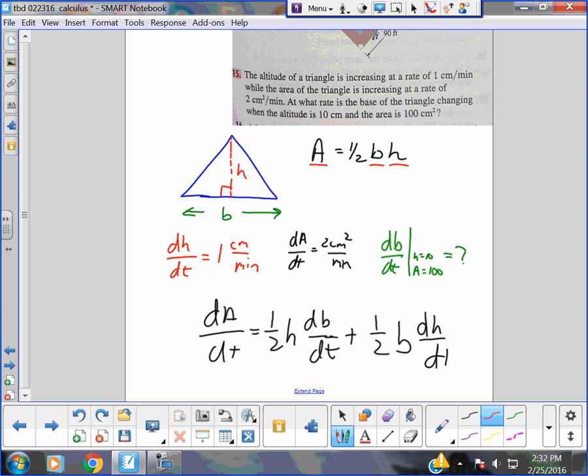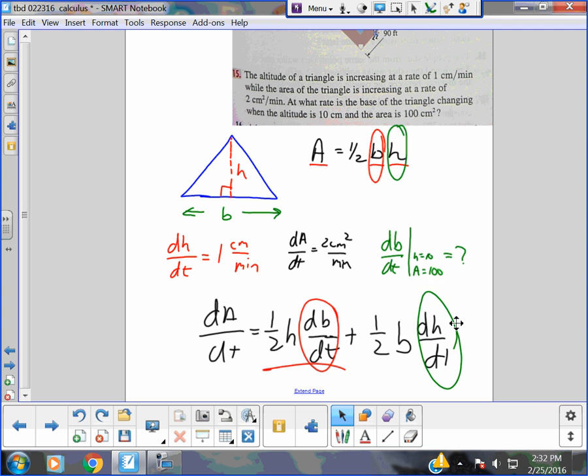Alright. If you're struggling with it, you have to see that Calissa took the derivative of b, which was one, db/dt for the first term, and the one-half and the h stayed. And on the second term, she said, the derivative of h is one dh/dt. You know, one-half b stays. It had to be two terms. Now it's simply math.